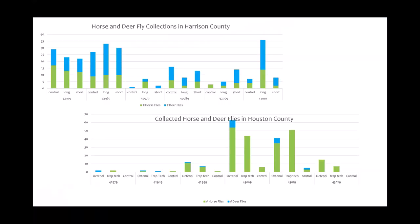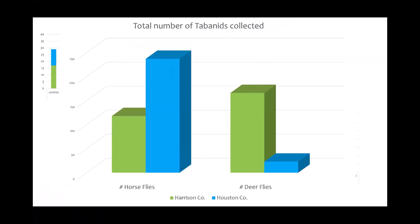Trap data from Harrison and Houston counties shows the H-trap is effective, though the species composition varies by county — one county had more deer flies than the other, reflecting local fly populations rather than trap performance. Statistical analysis showed no difference attributable to the trap itself. If tabanids are a serious problem, these traps are a recommended investment. Research with traps is ongoing across northeast Texas locations.